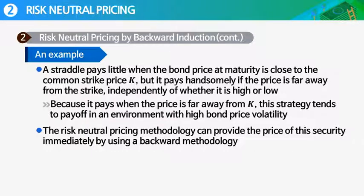A straddle pays little when the bond price at maturity is close to the common strike price K, but it pays handsomely if the price is far away from the strike, independently of whether it is going up or going down. Because the straddle pays when the price is far away from the strike price K, this strategy tends to pay off in an environment with high bond price volatility.